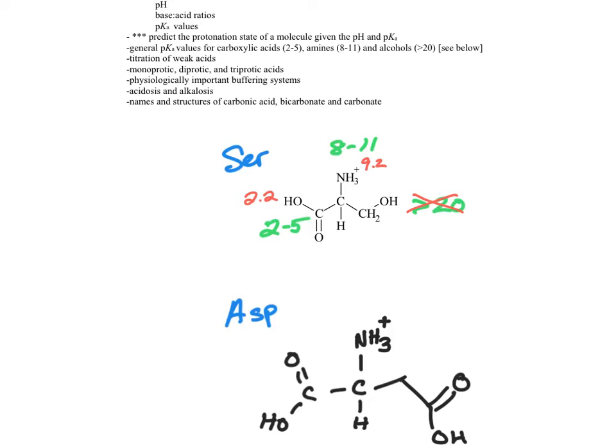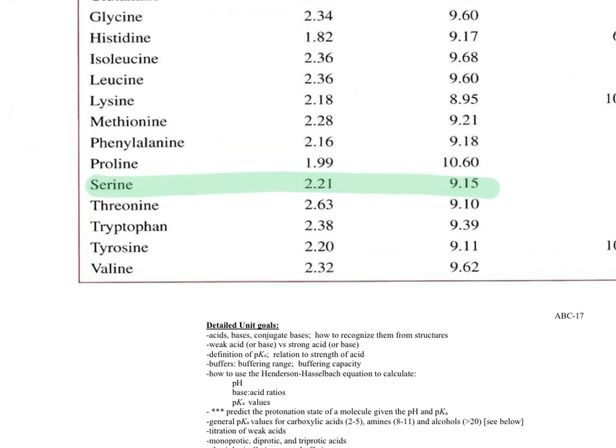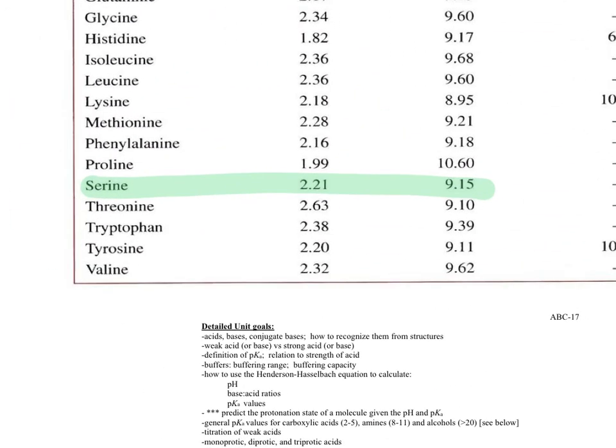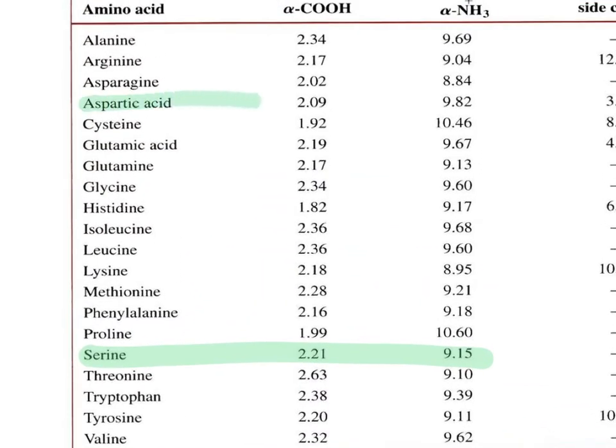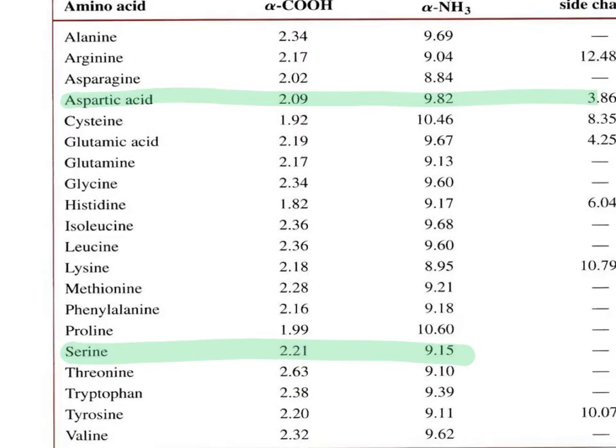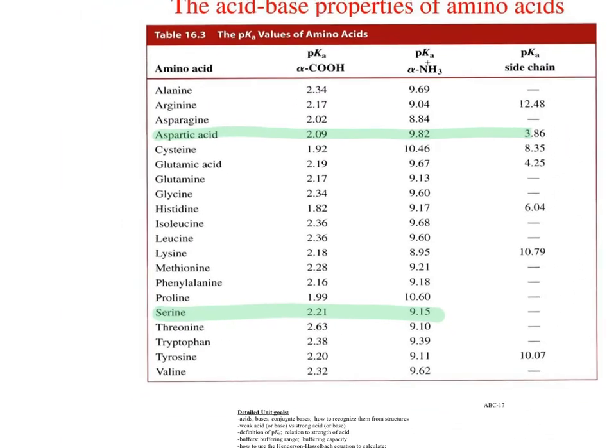Let's do the same for aspartate. Aspartate is way up there at the top, aspartic acid. We're going to have to look at all three columns now, though, because aspartic acid has a side chain that can actually have a deprotonation or protonation event. So we have 2.1, 9.8, and 3.9.